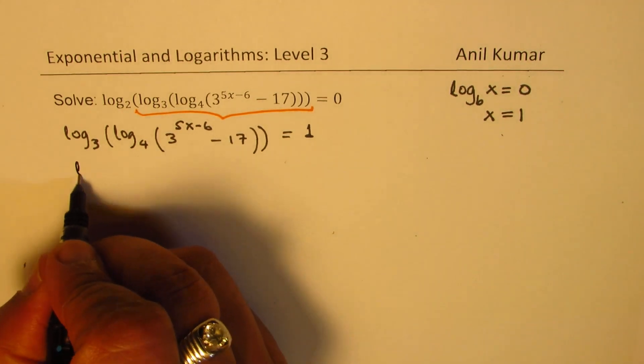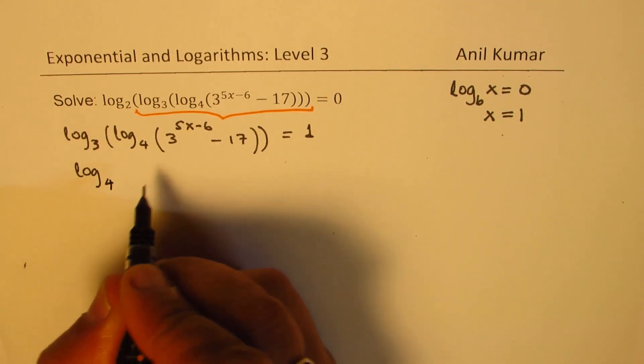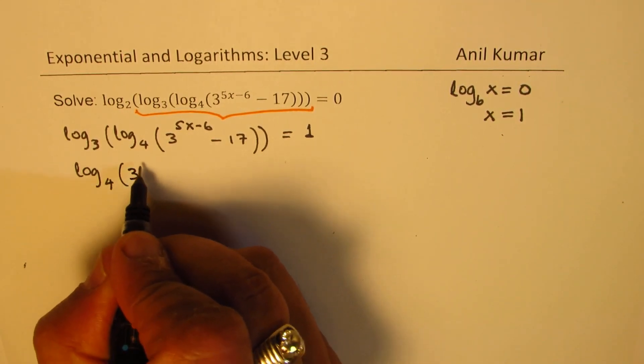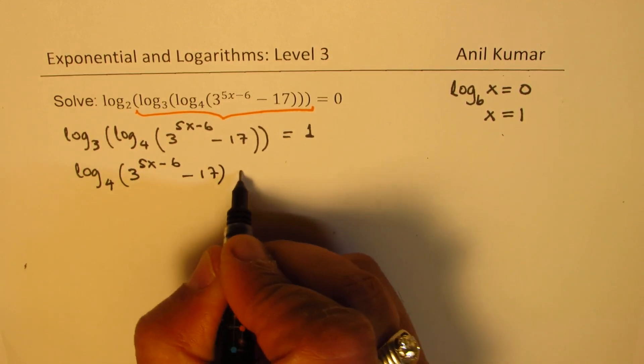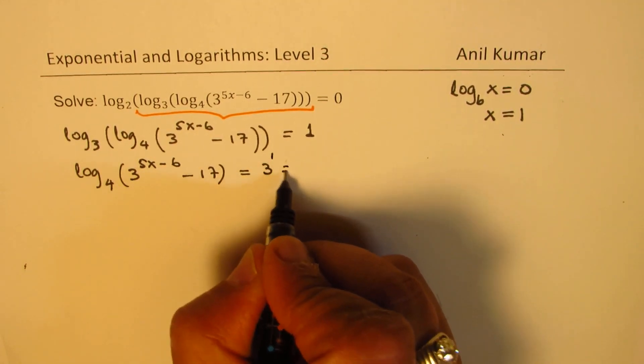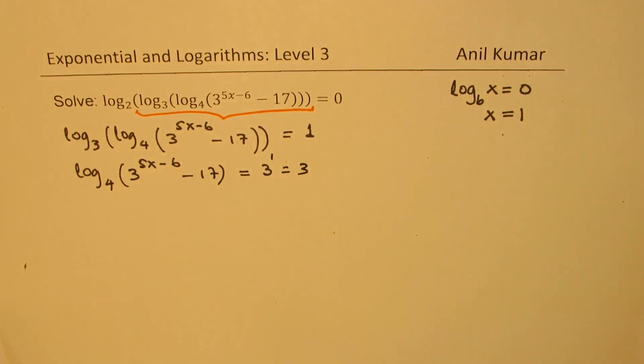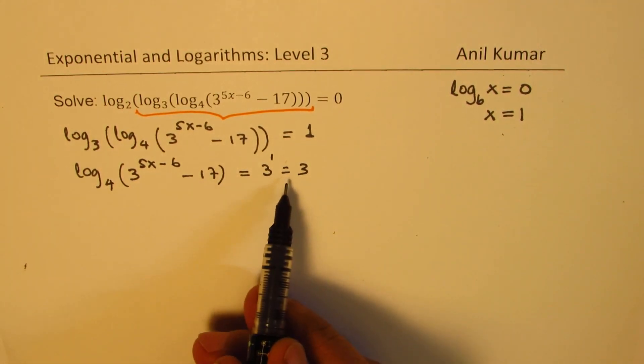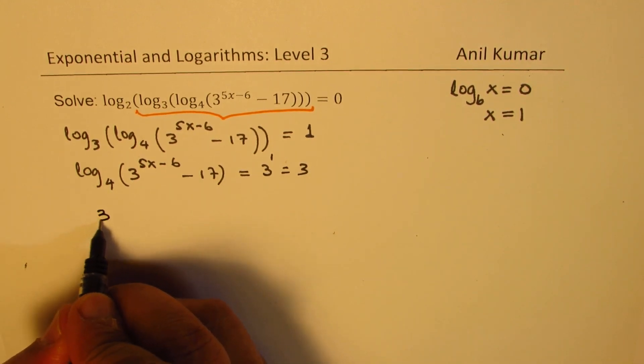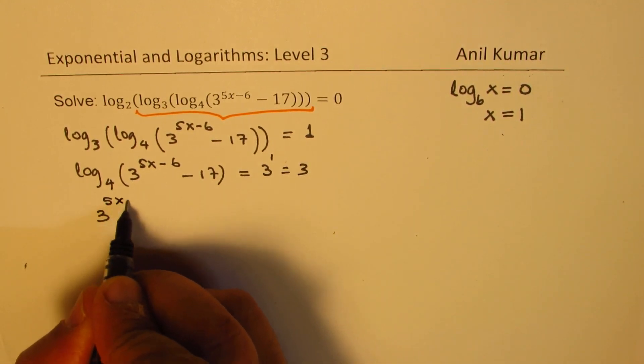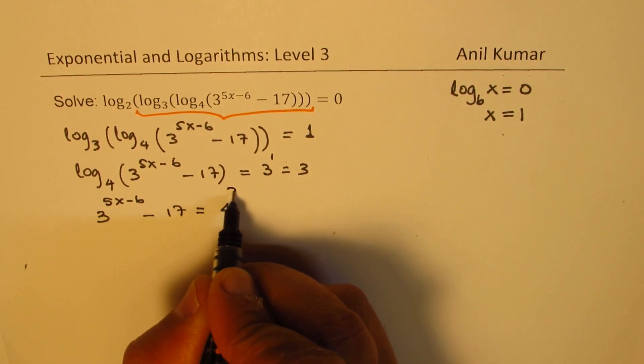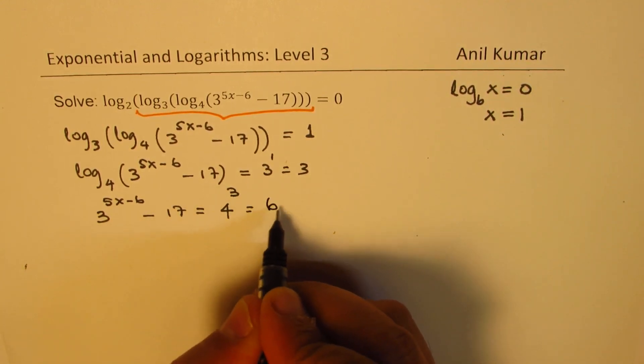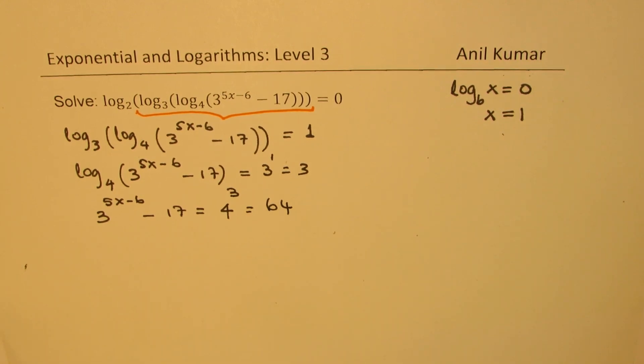So 3 to the power of 1 should be all this. We get log to the base 4 of 3 to the power of 5x minus 6, minus 17, equals to 3. Again we'll use the exponential form, writing this as 4 to the power of 3, which is 64.